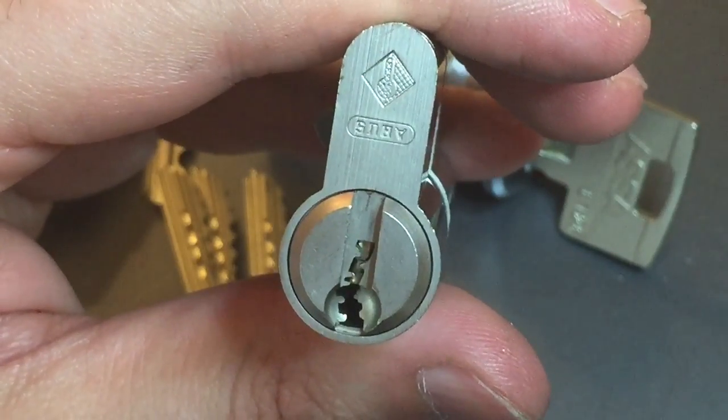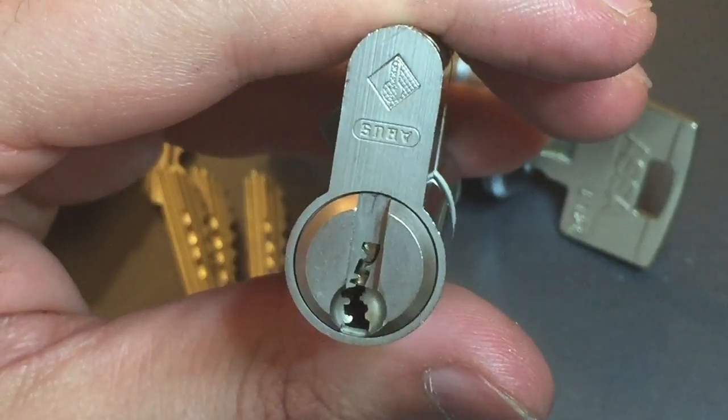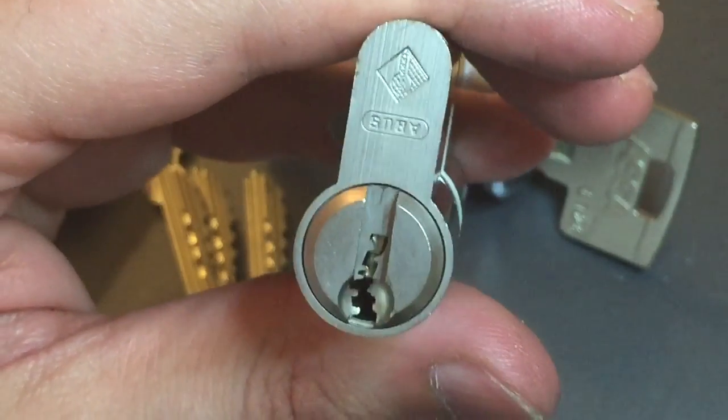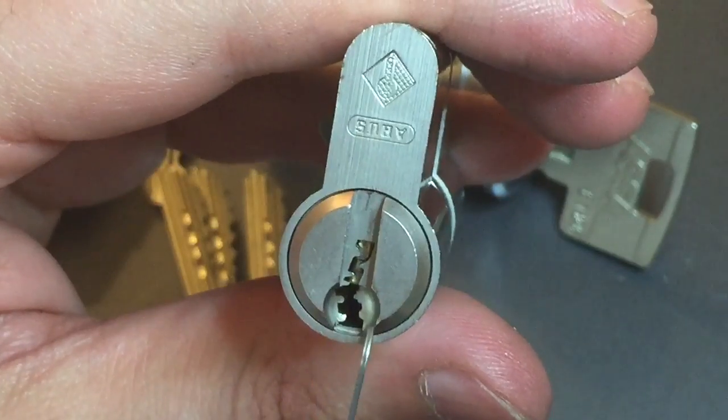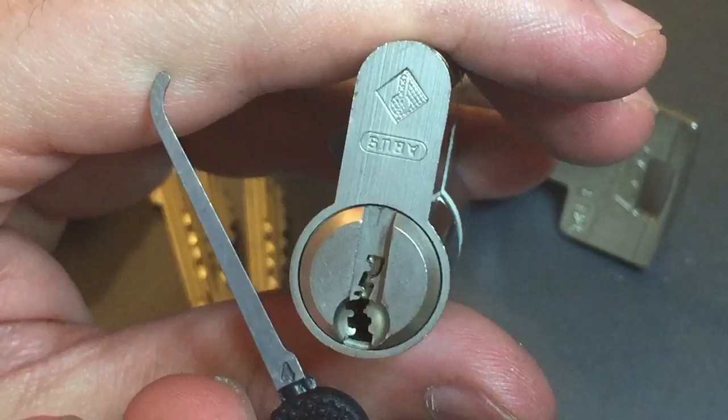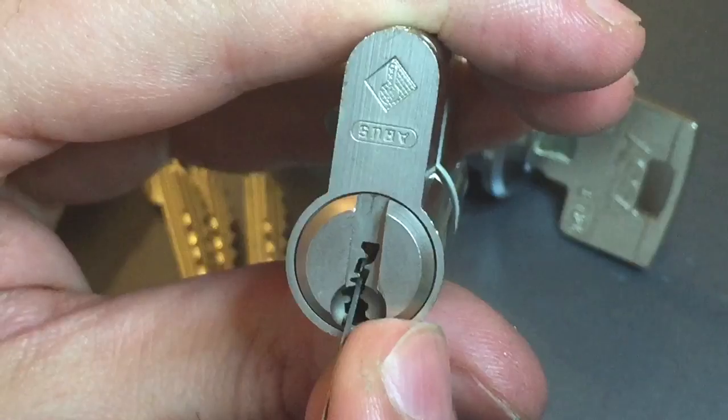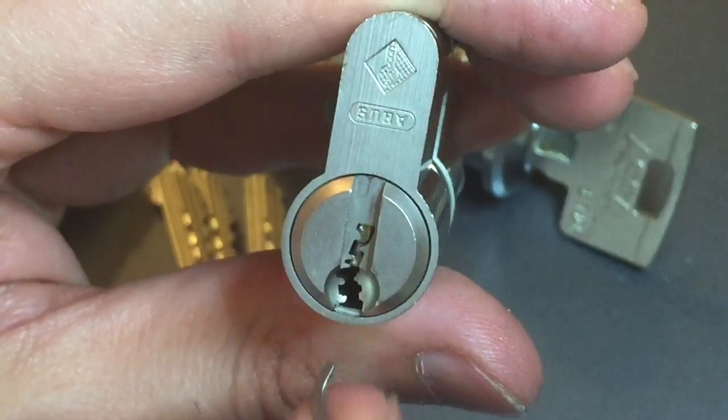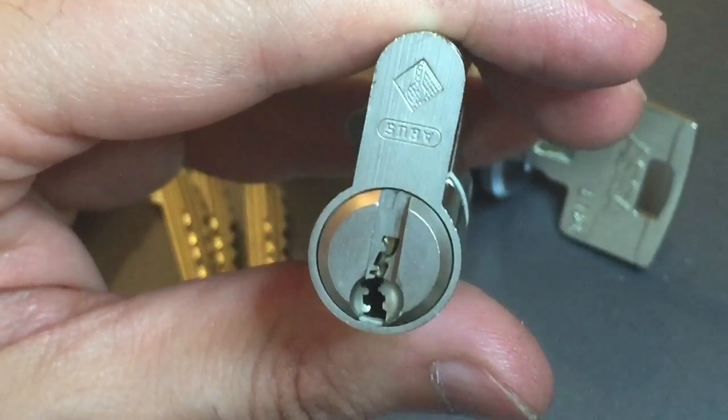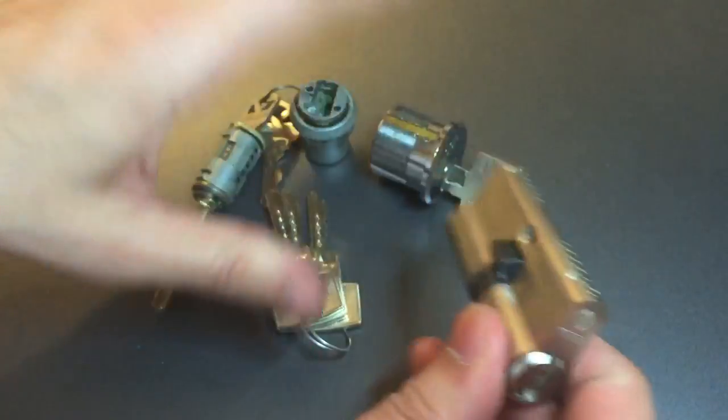anti-pick feature. But whoever came up with that has never seen my video on how to pick paracentric keyways because they left the whole bottom of this keyway wide open. That allows us to take even this thick 25 thousandths pick and we can move right up behind the warding there. So, I think we can probably pick this guy open and that's exactly what we are going to try to do right now.